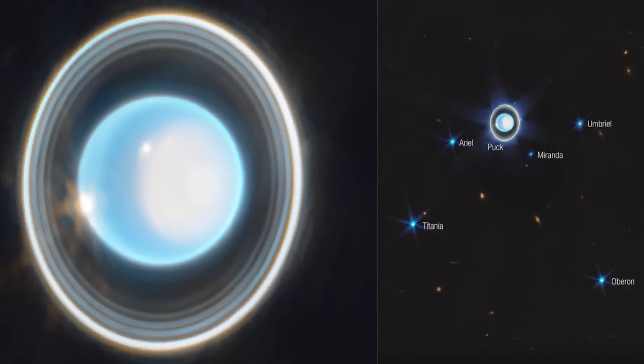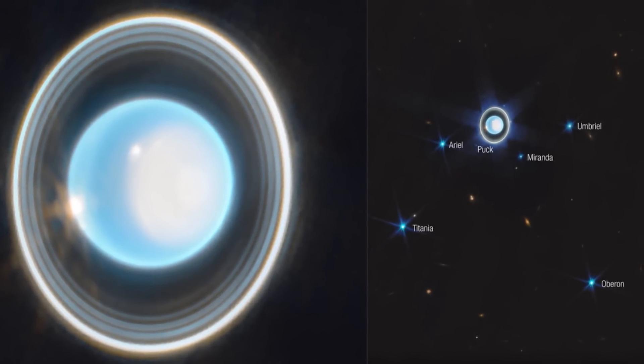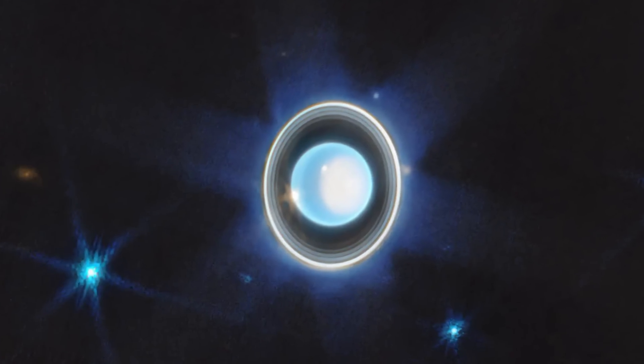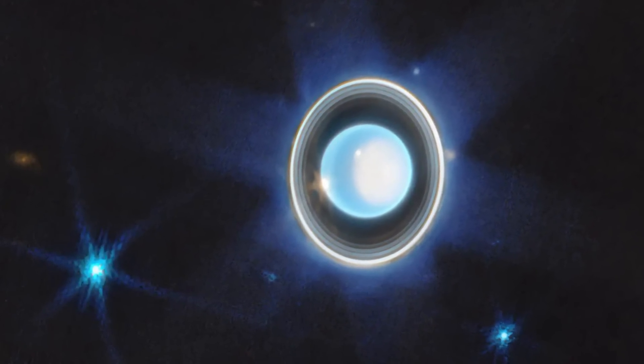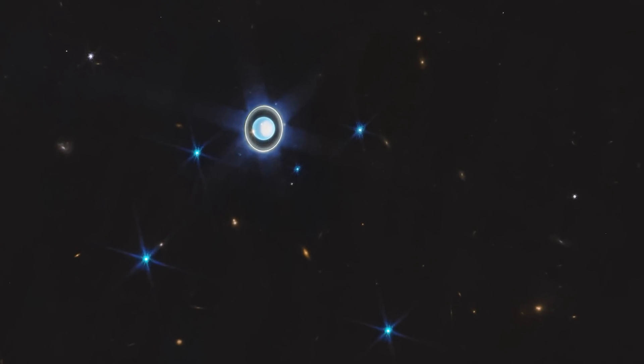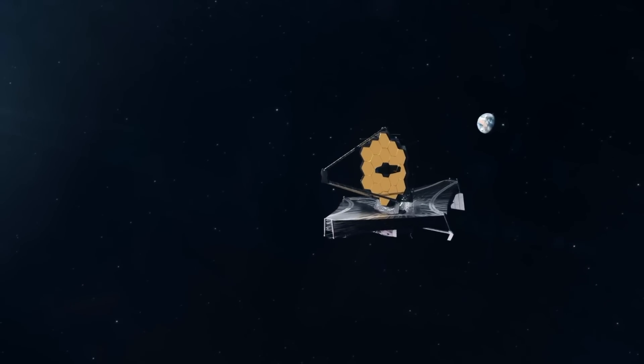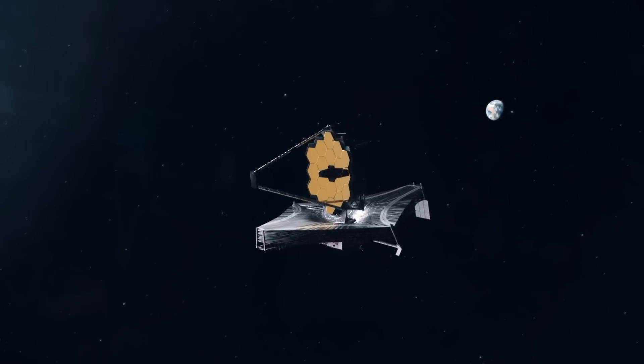The six brightest are identified in the wide view image. This was only a short 12-minute exposure image of Uranus with just two filters. It is just the tip of the iceberg of what Webb can do when observing this mysterious planet.